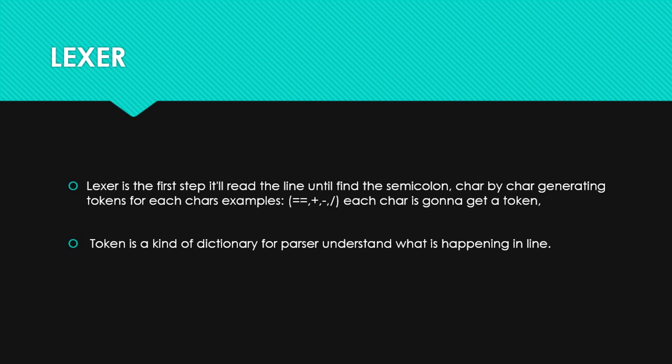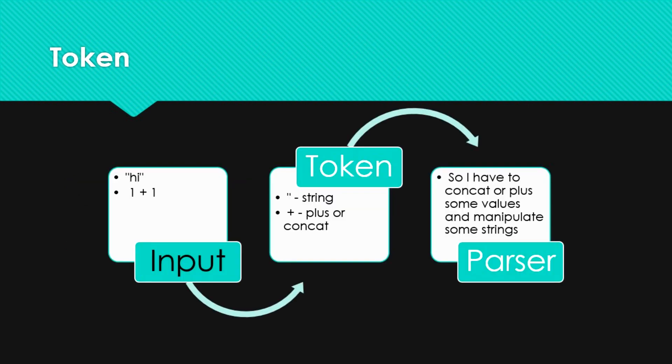The lexer is the first step. It will read the line until finding a semicolon, and it will read character by character, generating tokens for each character. Each character is going to get a token. A token is a kind of functionality for a person to understand what is happening in the line — it will give the name, the character type, and what is happening with that character.